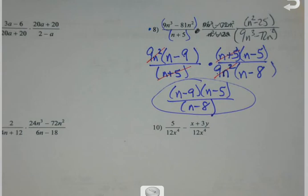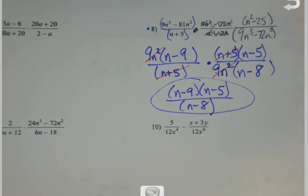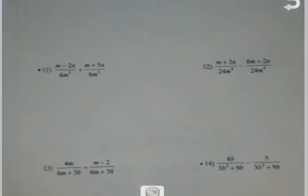So with multiply and divide: factor, factor, factor; cancel, cancel, cancel. And remember, if it's divide, flip the second fraction. Now we're going to change things up a little bit — the green sheet will become our friend as we move up to number 11.